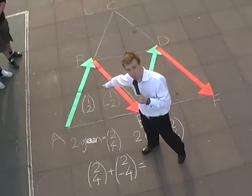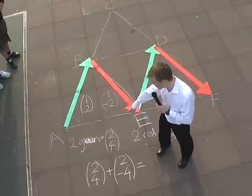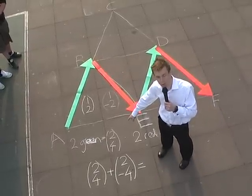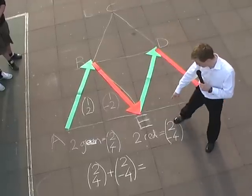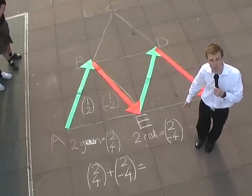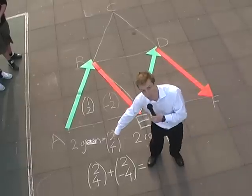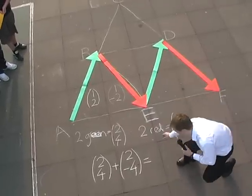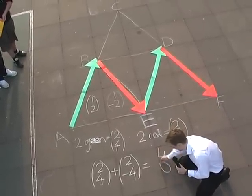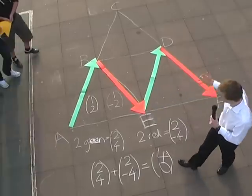Two greens, well one green is one across and two up. So two greens would be two across and four up. Reds are one across and two down. So two reds would be two across and four down. Now if we add them together, we've got two across and four up, plus two across and four down. That's going to be four across and none up or down.